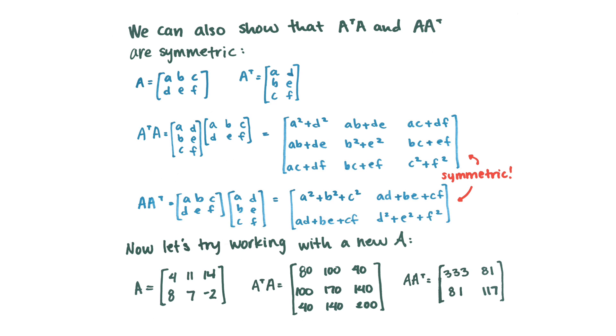We can also show that A transpose times A and A A transpose are symmetric, just with some matrix multiplication. So you can see I've written them with letters, and this looks really big and complicated. So if you are more comfortable with numbers, you can just try some number matrices. But I've done it out here, and you can look through it for a moment and see that along the diagonal, there are unique values. But if you were to switch the rows and columns, you would still have the same matrix both for A transpose A and for A A transpose, which indicates that they are symmetric. And we're going to try working with an A with some numbers now. So I've written A here, and I've multiplied out A transpose times A and A times A transpose.